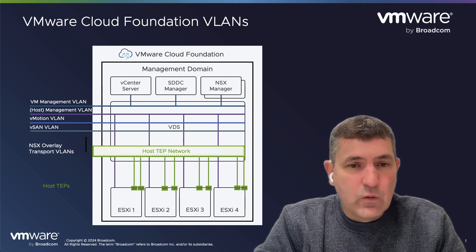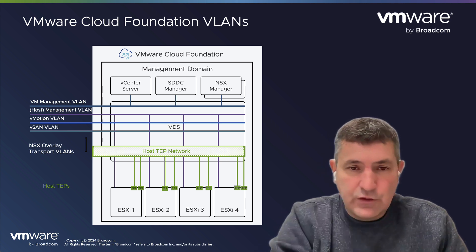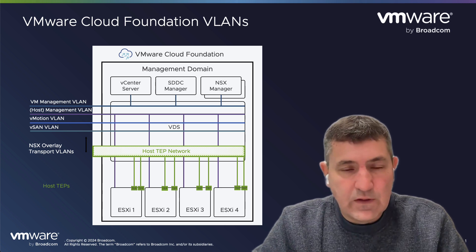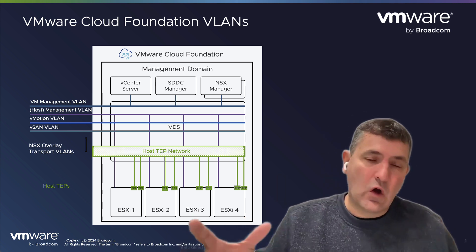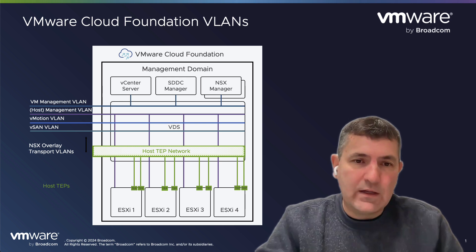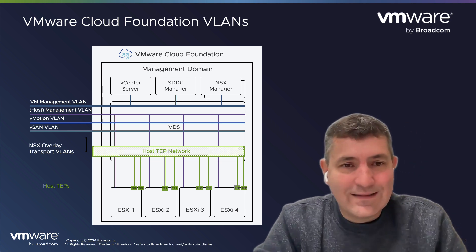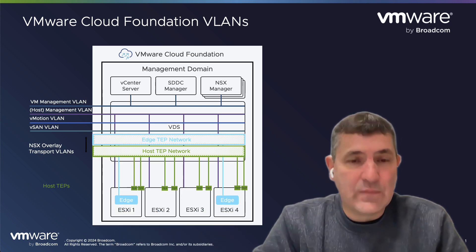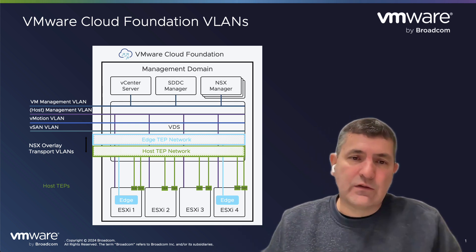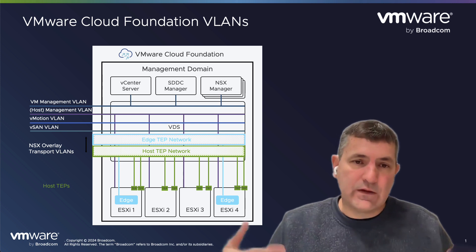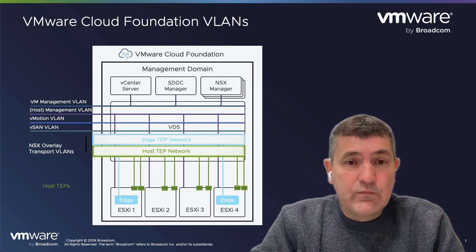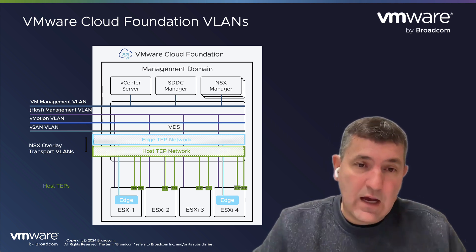To recap the five VLANs: you've got the management VLAN for ESXi hosts, the VM management VLAN for VMs running in the management domain, the vMotion VLAN, the vSAN VLAN, and the host overlay VLAN for NSX. There's also a sixth VLAN not needed during initial deployment but required the moment you want to deploy an NSX Edge cluster — that is the Edge TEP VLAN, where TEP stands for Tunnel Endpoint Protocol. That's the overlay network for NSX Edge nodes, and it's important to have all these VLANs defined up front on your physical network infrastructure.